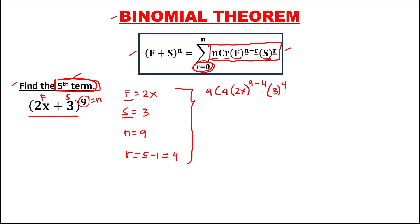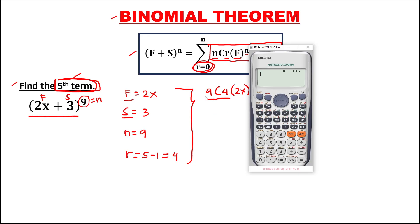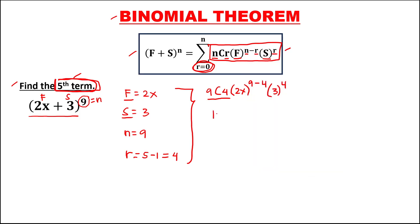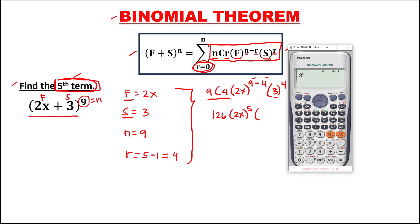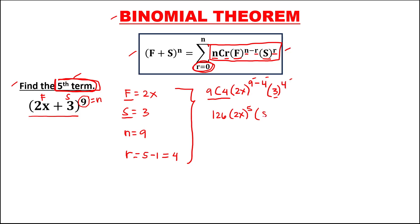To simplify: 9 choose 4 equals 126. So this is 126, then times 2x to the power 9 minus 4, which is to the power 5, then times 3 to the power 4. So 3 to the power 4 is 81, so positive 81.